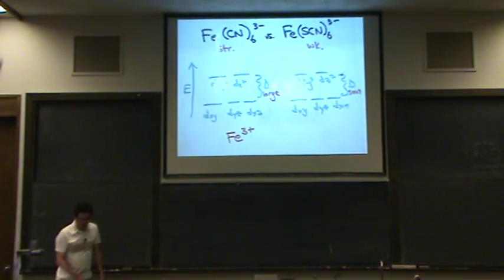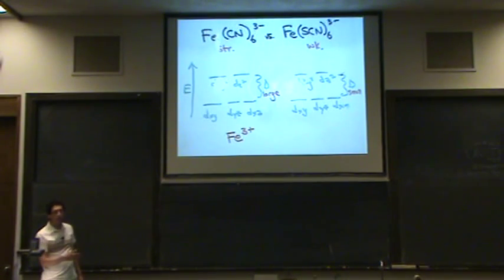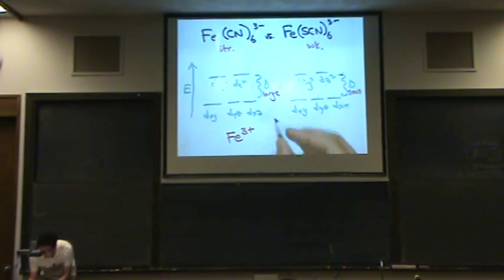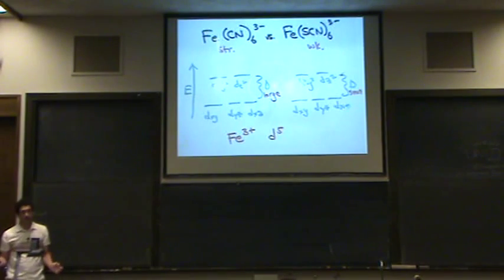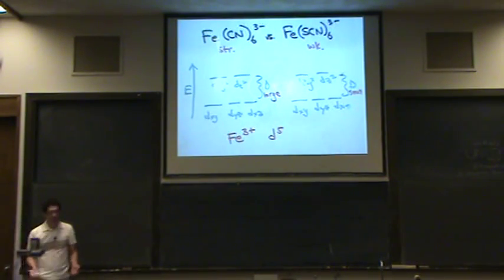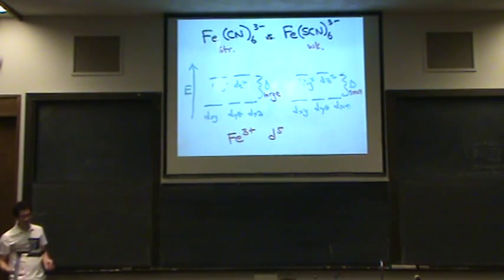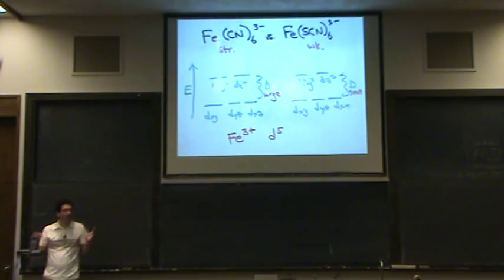Iron, neutral, is in the 8th column. It's in the 8th column of transition metals. Because it's in the 8th column, this is a d5. Because plus 3, you subtract 3 electrons. And I didn't have to write d5, I could have written 5 electrons. But the terminology for transition metals is to put a d in the number of electrons superscripted. So it's a d5, aka 5 electrons.